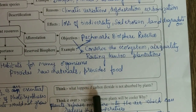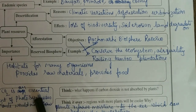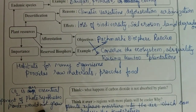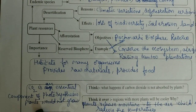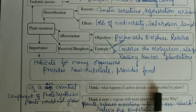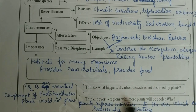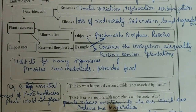Think — what happens if carbon dioxide is not absorbed by plants? Carbon dioxide is essential for photosynthesis, and plants would not grow if carbon dioxide is not absorbed. Regions with more plants will be cooler because plants release moisture into the air, which can reduce the temperature.